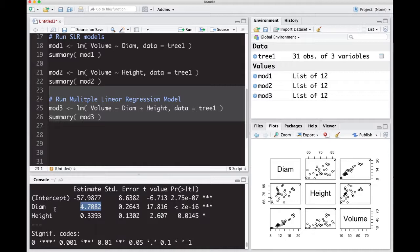If we increase the diameter by one inch, we expect a four cubic feet increase in the volume of the tree so long as the height stays the same. Now, so long as the diameter stays the same, for every one foot increase in height, we get a 0.3393 cubic foot increase in volume.